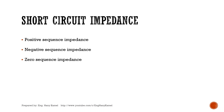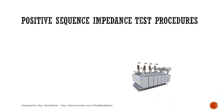As we know, short circuit impedance has three types: positive sequence impedance, negative sequence impedance — and in power transformers, negative sequence impedance is the same as positive sequence impedance, so no additional test is required — and then zero sequence impedance. We will start with the positive sequence impedance test.